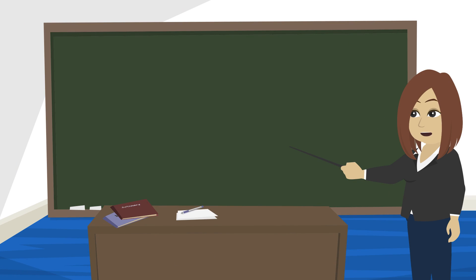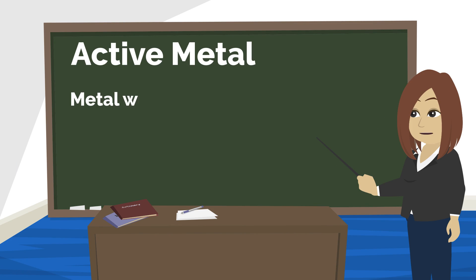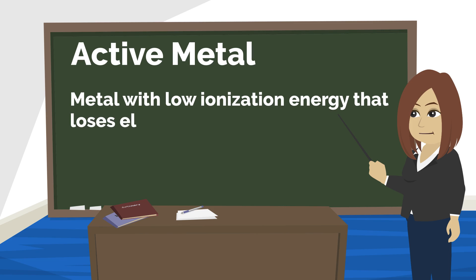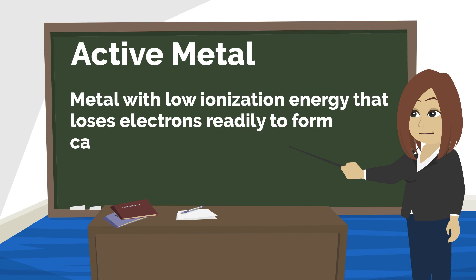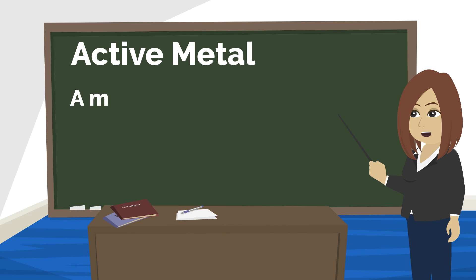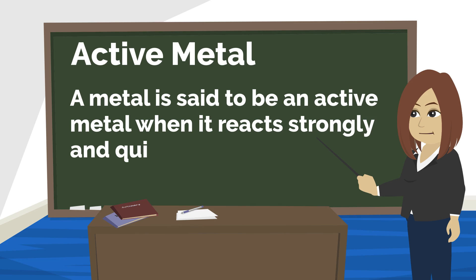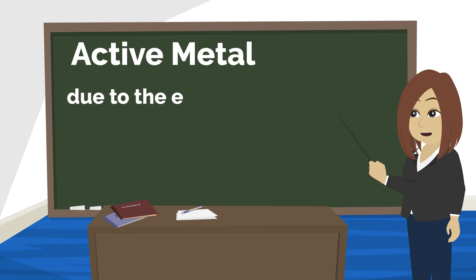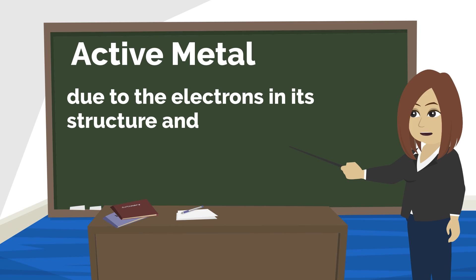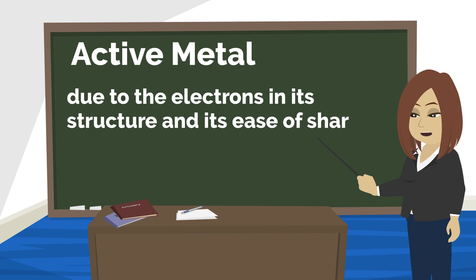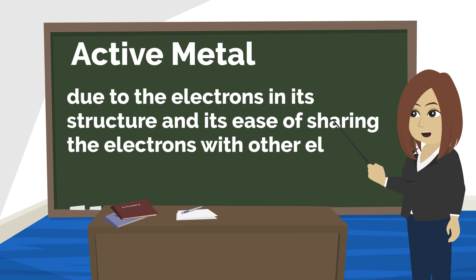The first definition of active metal is: a metal with low ionization energy that loses electrons readily to form cations. In other words, a metal is said to be an active metal when it reacts strongly and quickly with other elements due to the electrons in its structure and its ease of sharing the electrons with other elements.